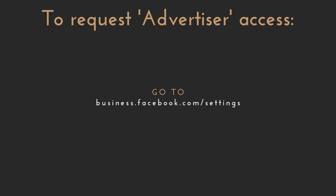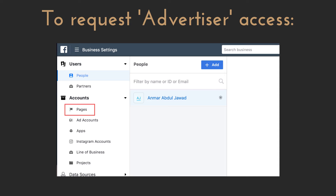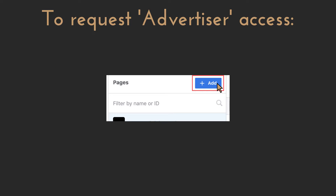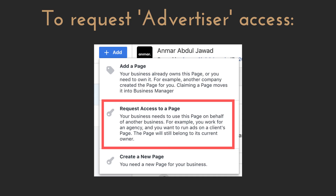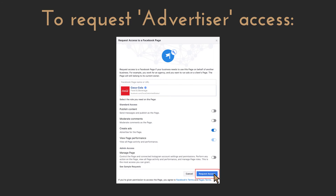To do so, go to business.facebook.com/settings, select your business if you have multiple, then on the left panel click Pages, click the blue add button, select request access to a page, find the page by searching for its name, then choose the roles you need to operate under and click request access. The owner will get a notification about your request and be able to accept it.